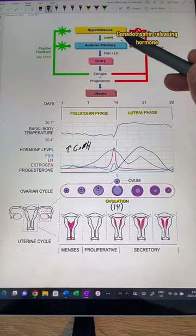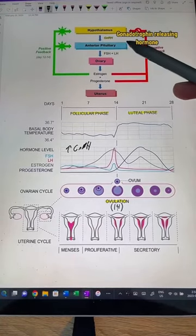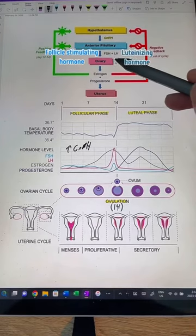Our hypothalamus releases gonadotropin-releasing hormone, stimulating the anterior pituitary to secrete follicle-stimulating hormone and luteinizing hormone acting on the ovaries.